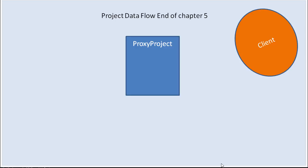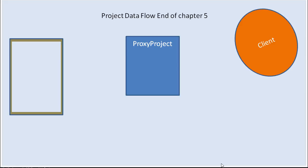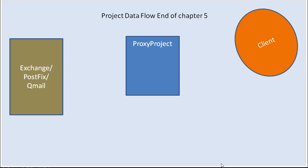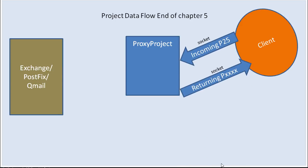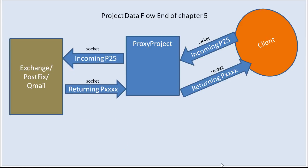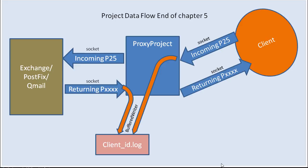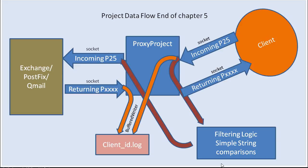At the end of Chapter Five we had the proxy project — the software we've been designing. We have the client, which in my case is a Telnet session but may be another email server or email program. Then we had our Exchange server, Postfix, or Qmail server. The client connects on port 25, then we connect to Exchange on port 25. I showed you how to hook in a buffered writer to log the information, and after logging for a while you get comfortable with how the process works.